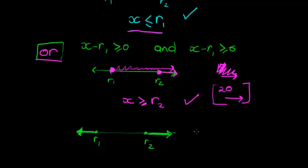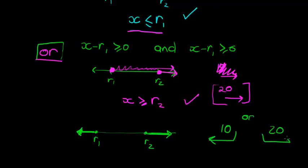Notice the 'or' again — I'm thinking of someone and they are younger than 10 or older than 20. Because it's 'or', it can be two different people. The 'or' means the conditions don't have to be true at the same time — it can be one or the other.